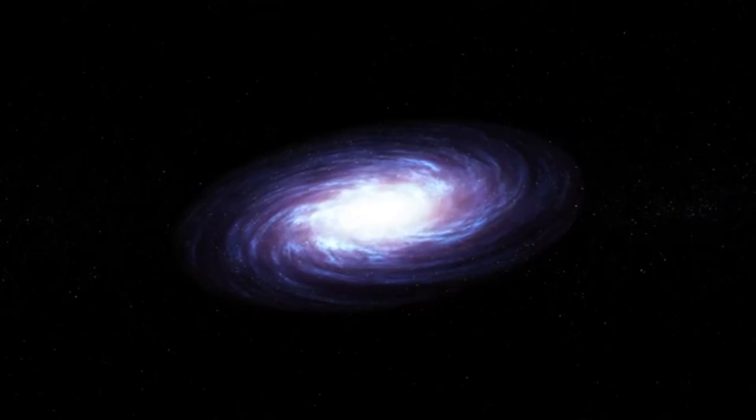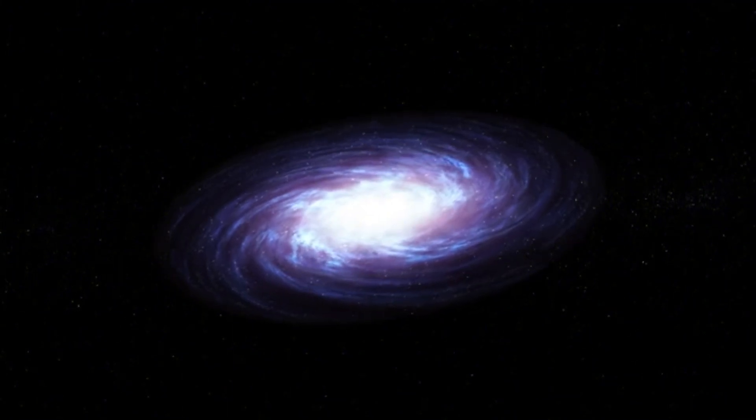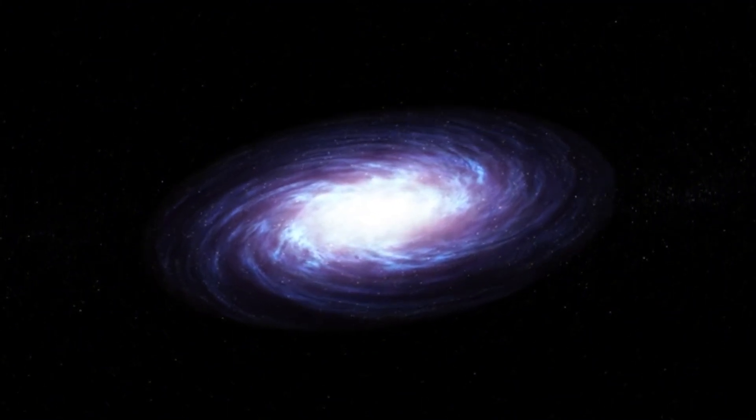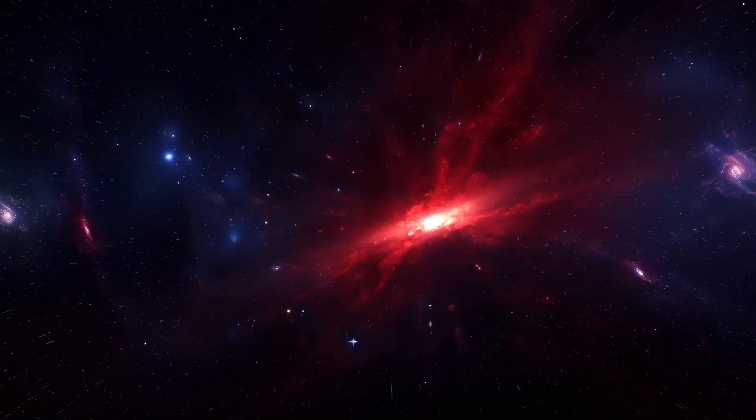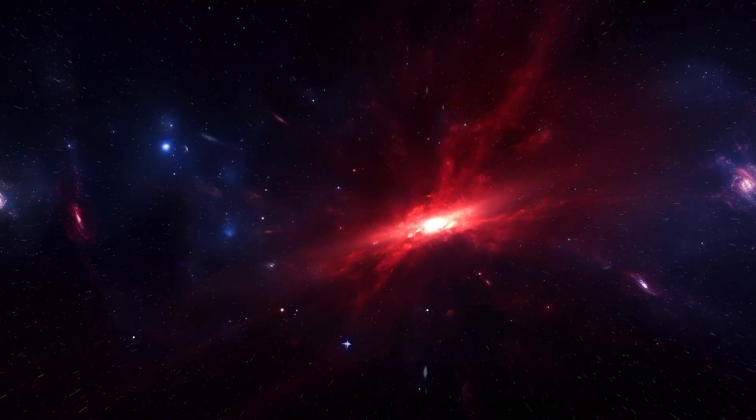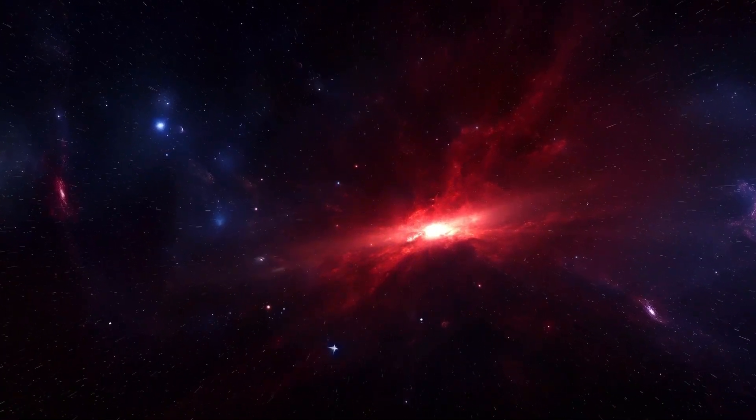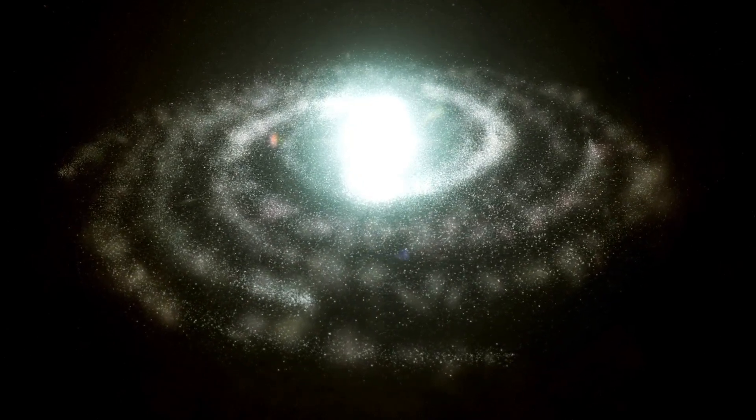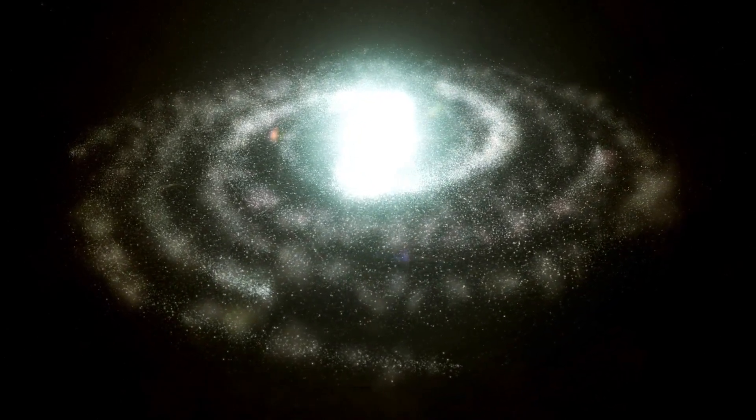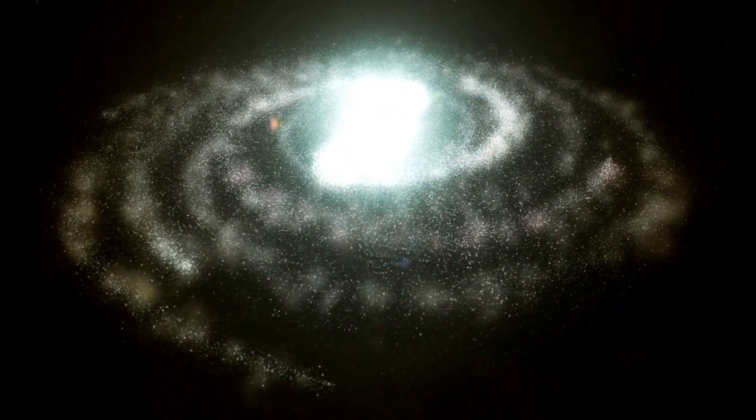Interestingly, Betelgeuse is not a solitary star. It may be part of a binary system. Some evidence suggests that it could have a companion star, which could influence its evolution over time. The gravitational interaction between these stars might play a role in the shedding of material from Betelgeuse's outer layers, contributing to the changes in brightness observed by astronomers. This potential companionship adds another layer of intrigue to the study of this red supergiant.